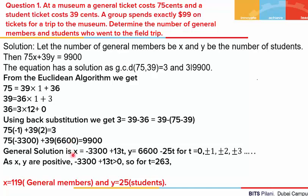We write the general solution as x = −3300 + (39/3)t = −3300 + 13t, and y = 6600 − (75/3)t = 6600 − 25t. For different values of t starting from 0, plus or minus 1, etc., we get infinitely many solutions for such a problem.